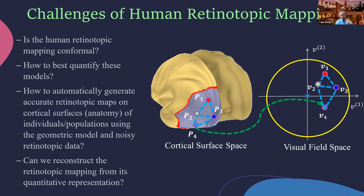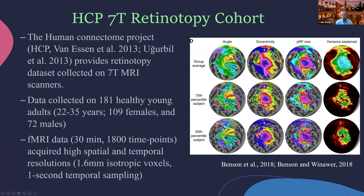Another challenge is that current models change the original functional image data. The question is: from that description, can we reconstruct the original visual space information? For this research, the HCP released in 2018 a high-resolution seven-tesla retinotopic map dataset including 181 healthy young adults with functional MRI data. This dataset provides the foundation for us to develop and validate our mathematical model. The HCP data already identifies V1, V2, and V3 areas.